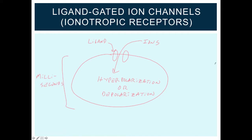One example of a ligand-gated ion channel is the nicotinic acetylcholine receptor. And the ligand in this case would be acetylcholine.